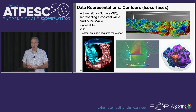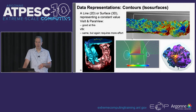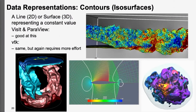Contours, or isosurfaces — or iso-lines in 2D — are essentially a surface or line representing a constant value throughout the dataset. For example, in the lower left showing mixing of fluids, you can see four different surfaces, each representing a different iso value colored accordingly. By contrast, the upper right shows a single contour at a specific iso value but colored by another scalar field in the dataset. VisIt and ParaView are both really good at this, as is VTK.